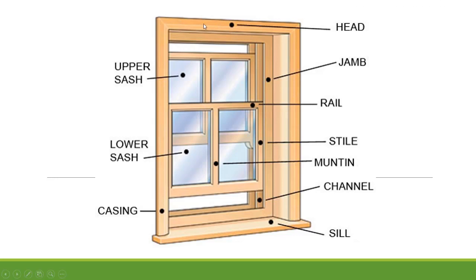Let's start with the top horizontal part — this is called the head. In a door, this part is also called the head, as we discussed in the previous video. This horizontal wooden part is called the head of the window, and these vertical components are called jambs.